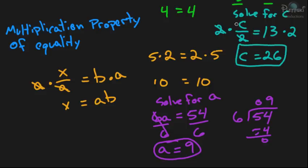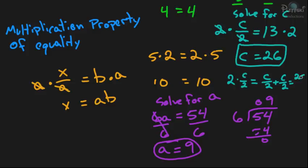If you don't understand why the 2s cancel out, maybe this will help. When we multiply 2 times c over 2, that's the same as saying we have 2 of them — two c-over-2s. Since we have 2 of them, that's going to equal 2c over 2. And 2 divided by 2 is just 1, so you're left with 1c, or just c. That's why we can cancel out the 2s. So c equals 26, solved using the multiplication property of equality.